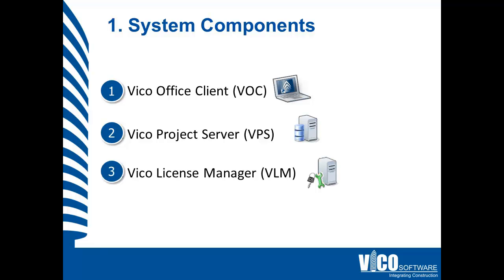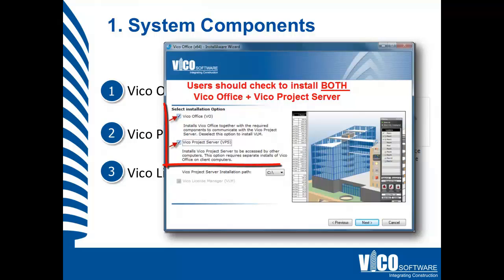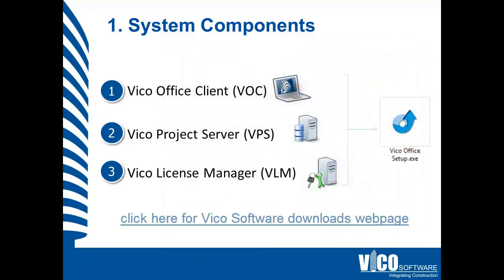The third is the Vico license manager, VLM for short. It's only required if you're sharing licenses, and it's not installed on a user's machine but on a shared server. All components are in a single executable setup file, but make sure when going through the user process to check the boxes that you need for your installation. Please ensure that you download the latest setup file from the Vico downloads page.